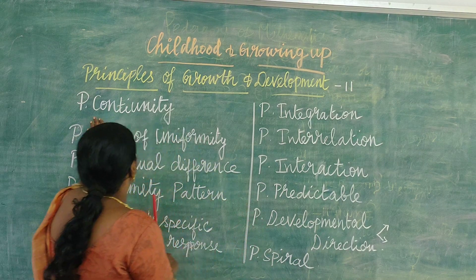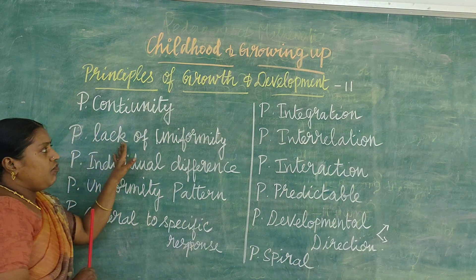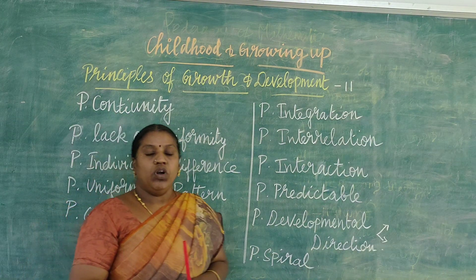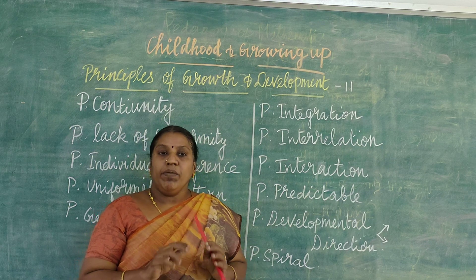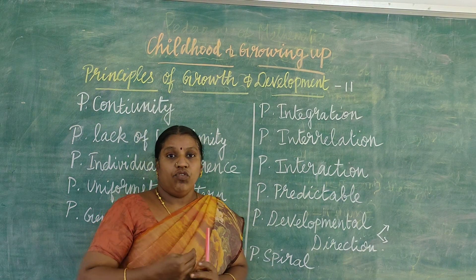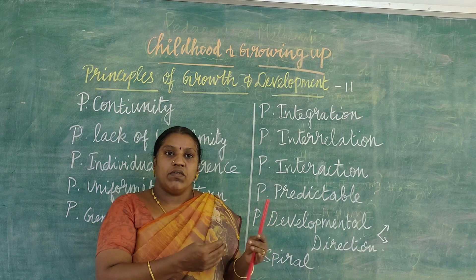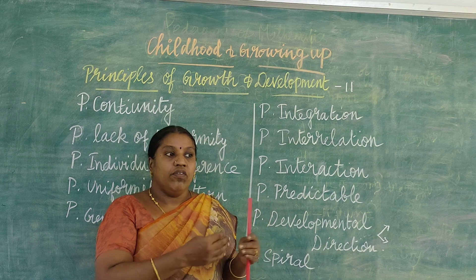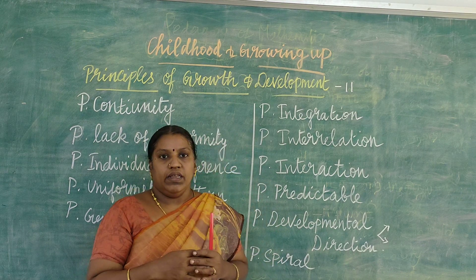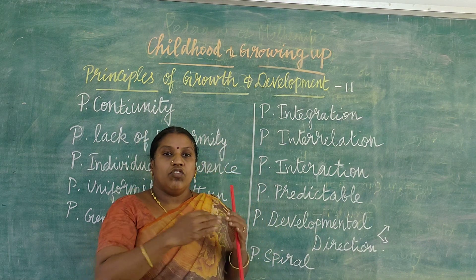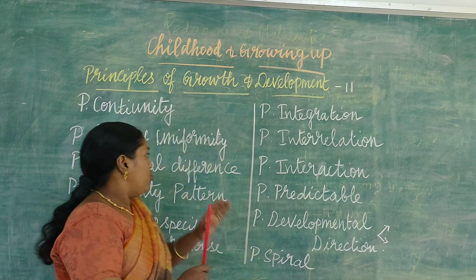That is why it is called the principle of continuity. Then comes the principle of lack of uniformity. Not every person has the same rate of growth. Some of your friends will be growing in height rapidly during puberty, suddenly increasing in height, but not like others. So there is a lack of uniformity among individuals.